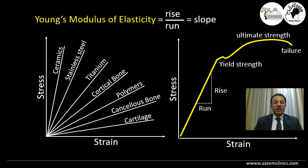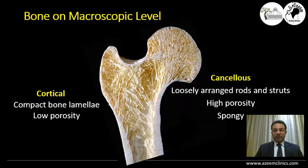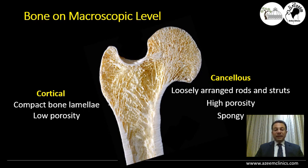Going back to our material — bone. On the microscopic level or the gross picture, we have two types of bone: cortical, which is the compact bone composed of compact lamellae with low porosity, and the cancellous or spongy bone, which is composed of loosely arranged rods and struts with very high porosity. Those are the two types of bone that we have on a gross level.